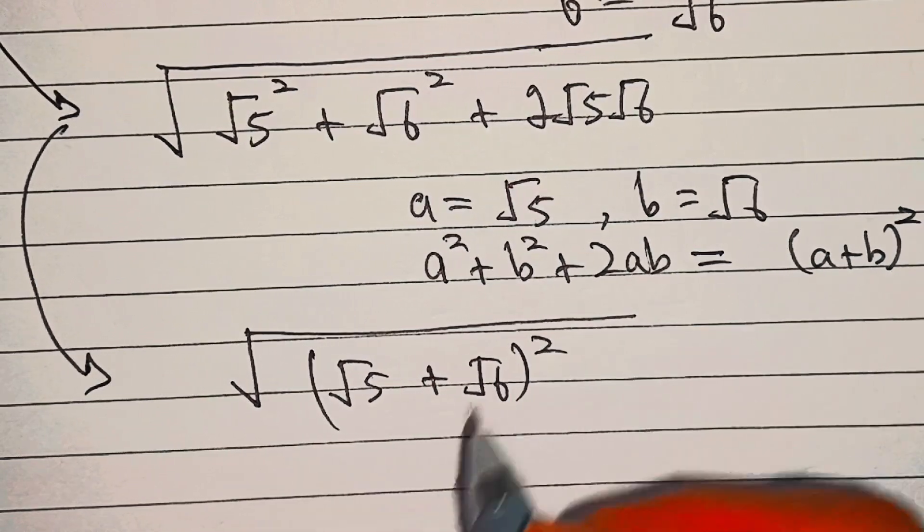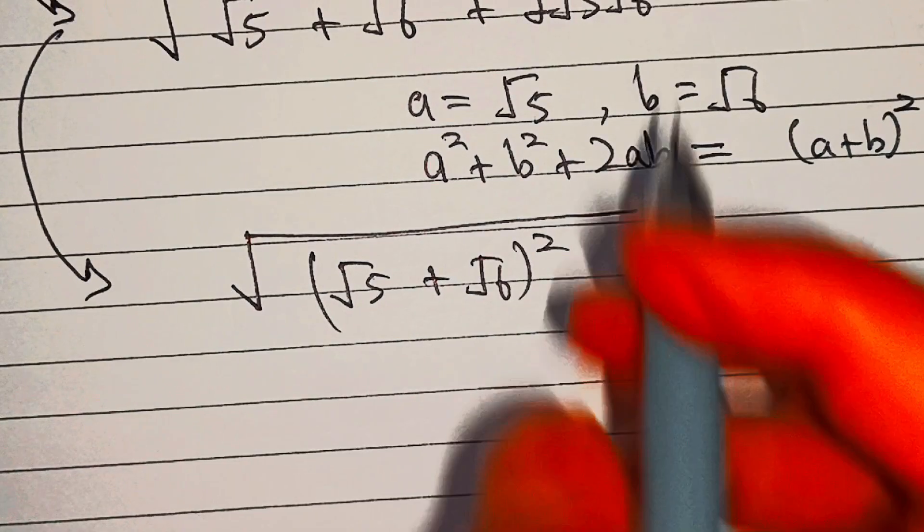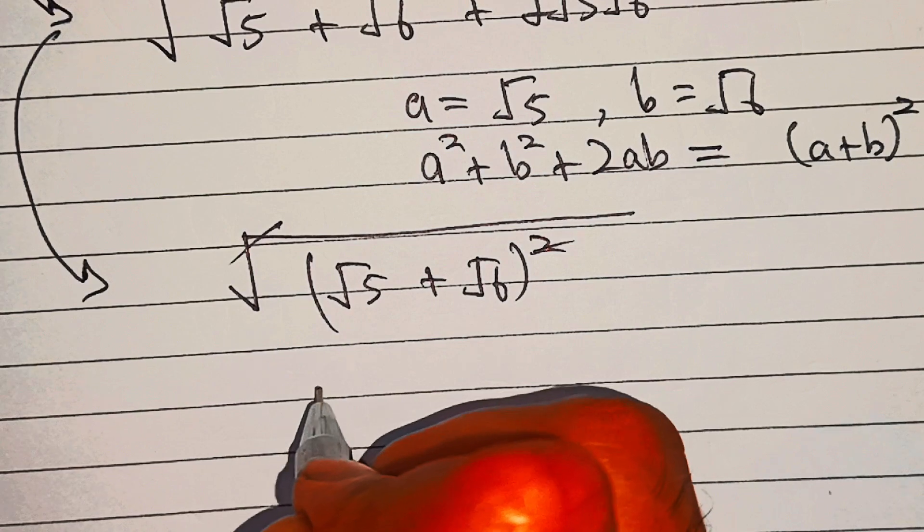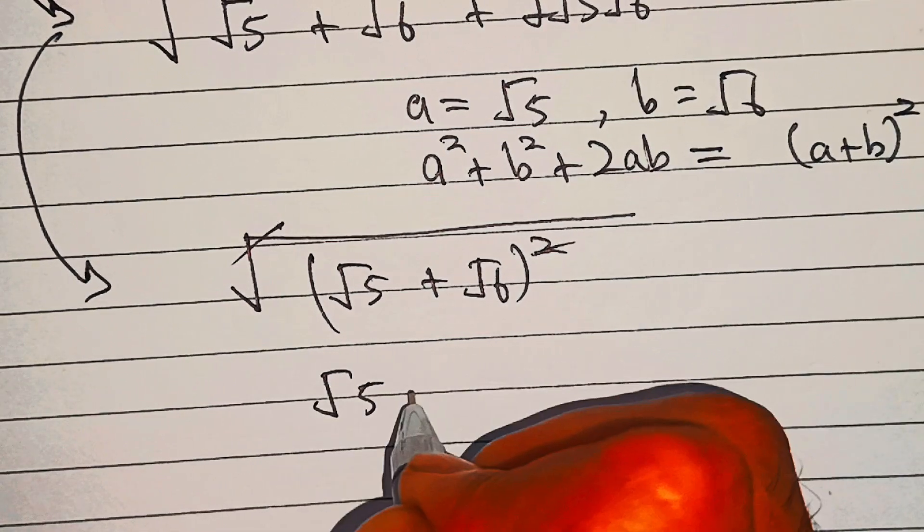Now this square root and square can be cancelled out, so here remains under root 5 plus under root 6.